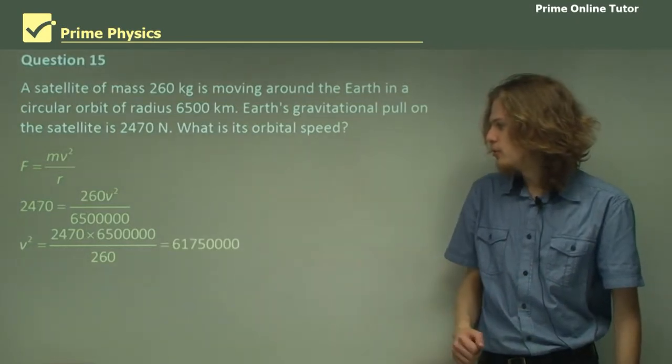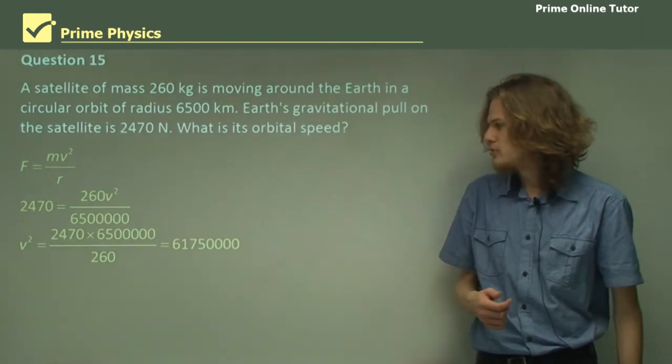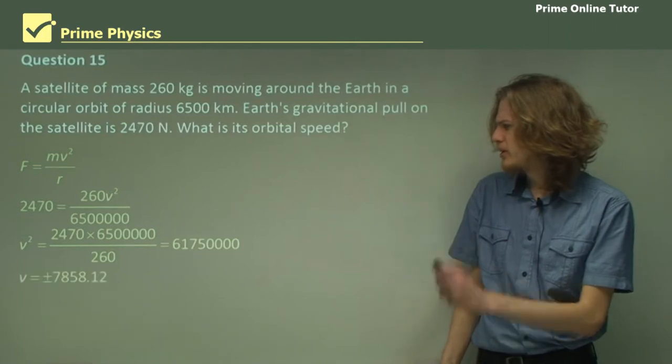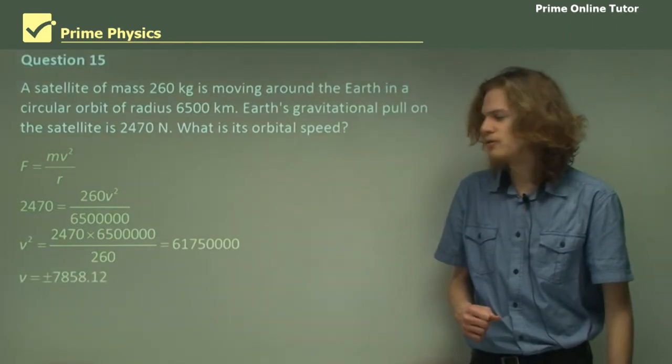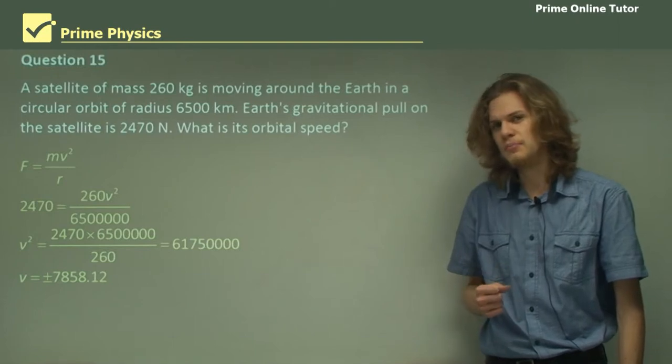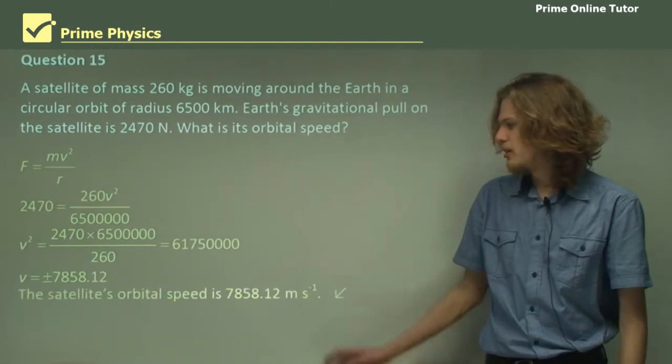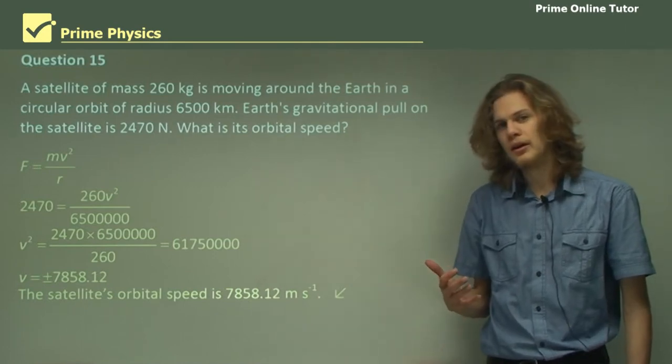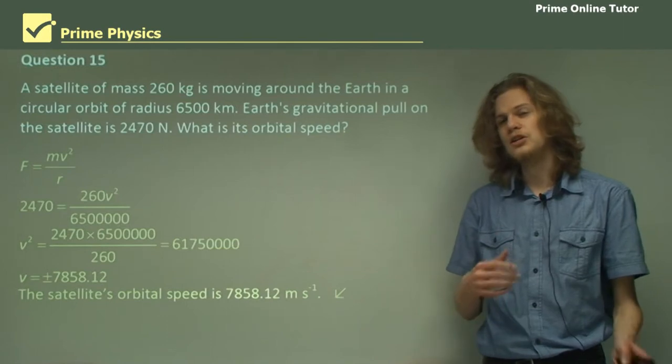So, taking the square root of 61,750 kilometers per second, we'll end up with 7,858 meters per second, because we're using SI units. Therefore, the satellite's orbital velocity will be 7,858 meters per second. The plus or minus means that we don't know whether it's orbiting to the east or orbiting to the west.